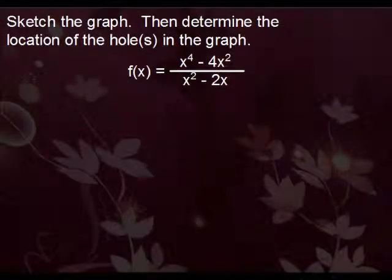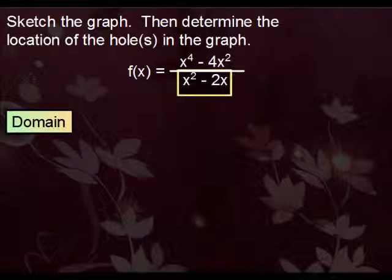Let's do one more. Let's say we were to graph this one. Let's again begin with the domain. Recall the domain is all real numbers except whatever makes the denominator here zero. So let's try and figure out those two values. So x squared minus 2x equals zero.